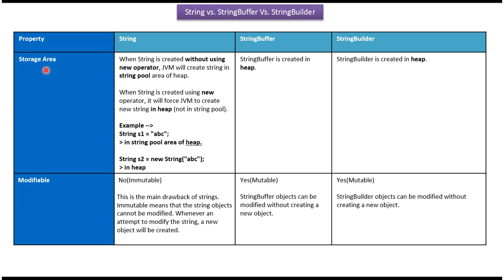Property is storage area. When string is created without using the new operator, JVM will create the string in the string pool area of the heap. When string is created using the new operator, it will force JVM to create a new string in the heap, not in the string pool. For example, here I have created a string using a literal, so it will be stored in the string pool area of the heap. Here I have created a string using the new keyword, so the string will be created in the heap.